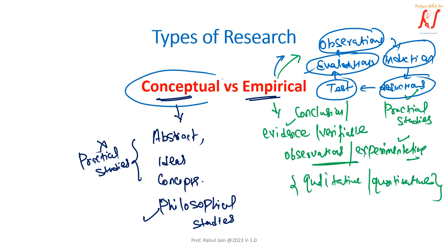Whereas conceptual research is generally based on strong ideas, abstracts, or some kind of concepts — it is a kind of philosophical study. There is no proven or verifiable evidence required; we only require a philosophical research study.